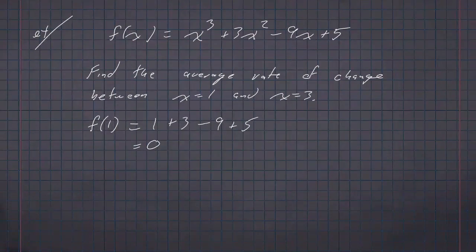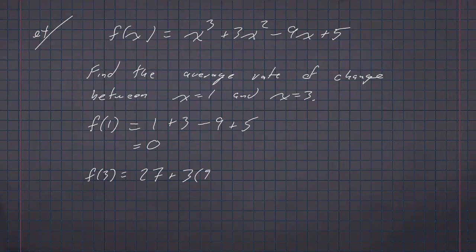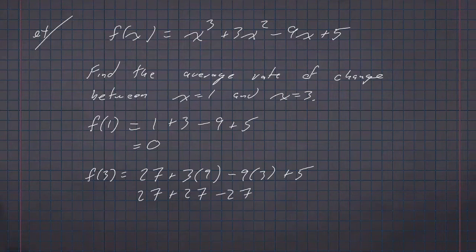Then I evaluate f of 3. 3 cubed is 27. 3 squared is 9. 3 times 9 is 27. 27 plus 27 is 54, 54 minus 27 is 27, and 27 plus 5 is 32.